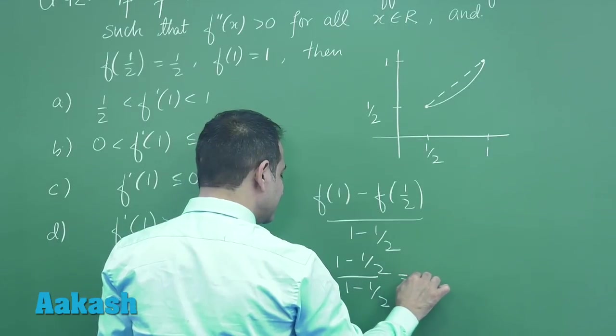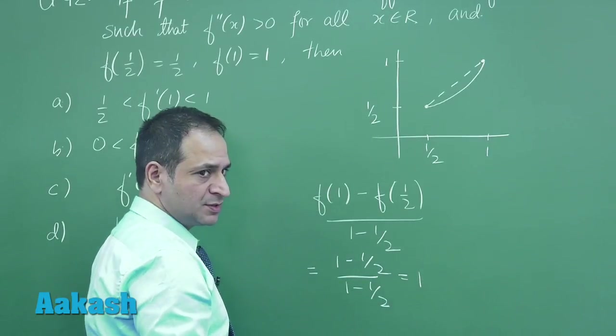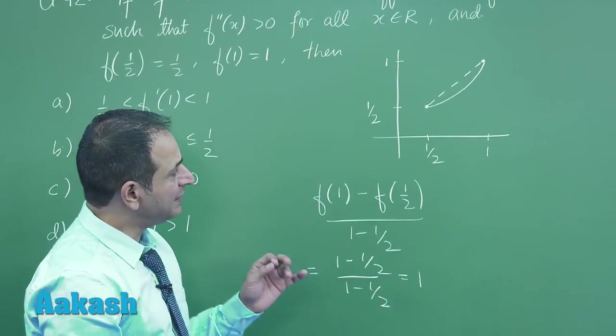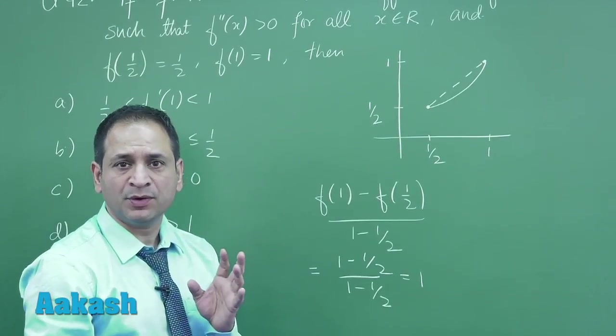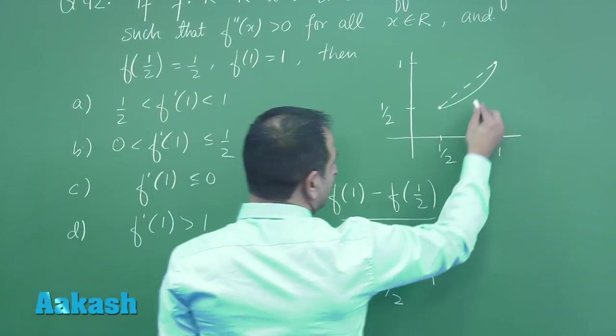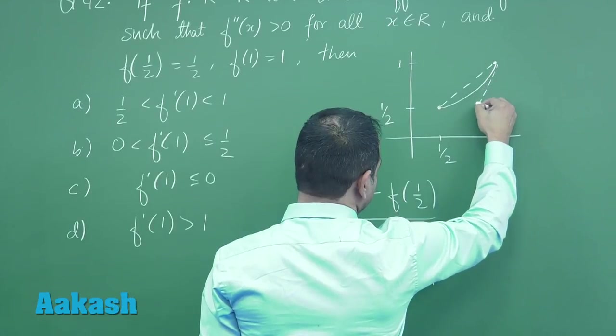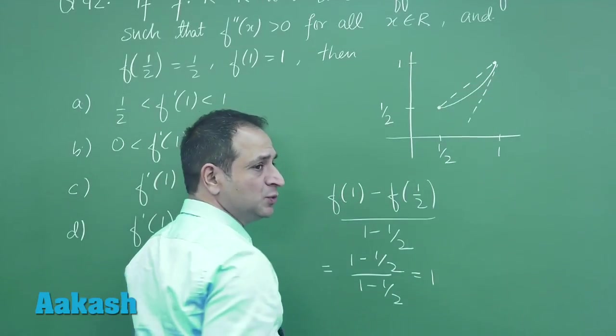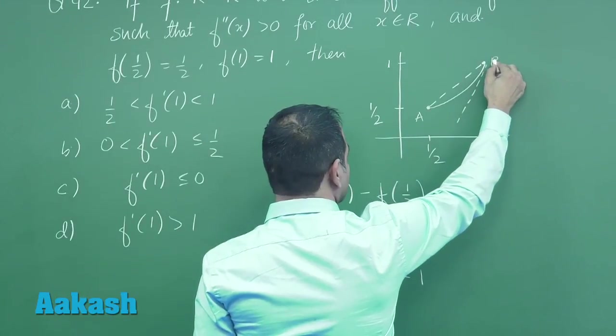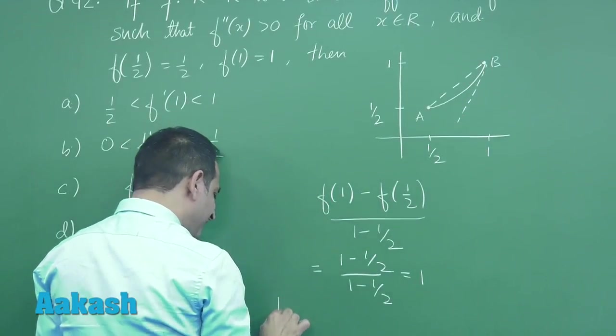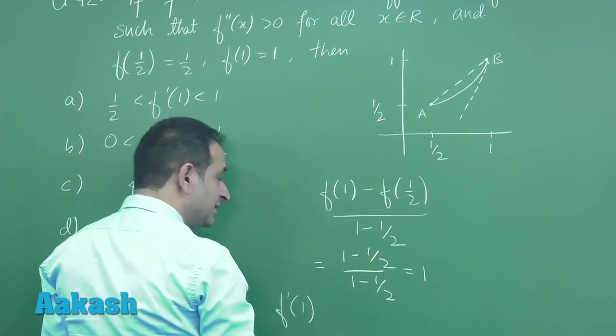So the slope at any point, say at point 1, is bound to be greater than the slope of the chord AB. So definitely f'(1), that is the slope of the tangent at 1, is greater than the slope of the chord AB.